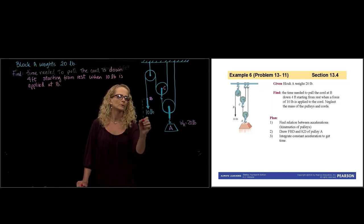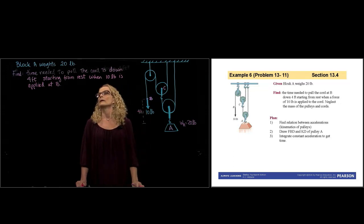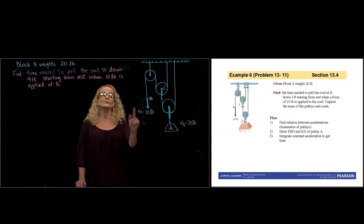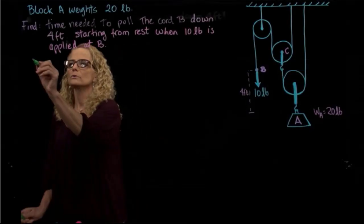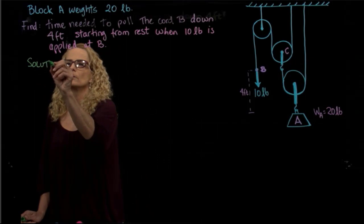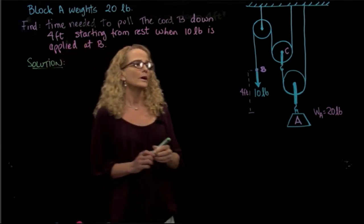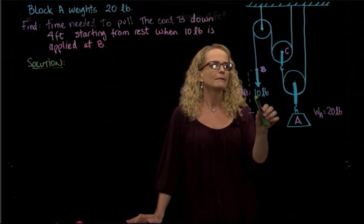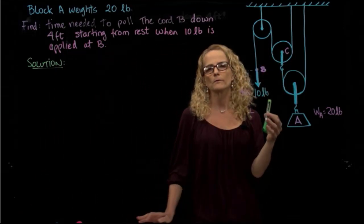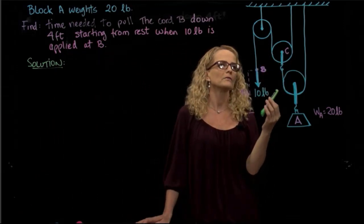We know that this is going to be four feet down from rest when 10 pounds is applied. So our solution: if we apply a force at B, we see that the whole system of pulleys is going to be affected.